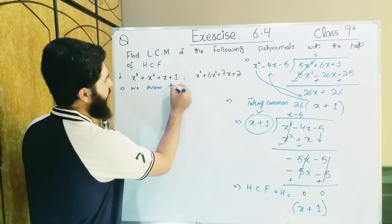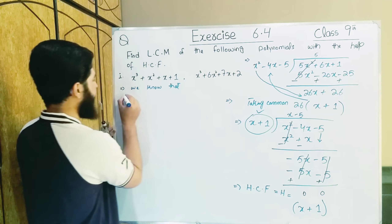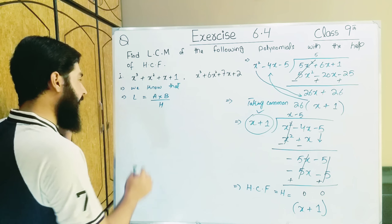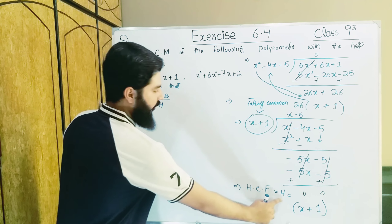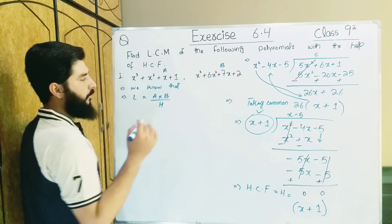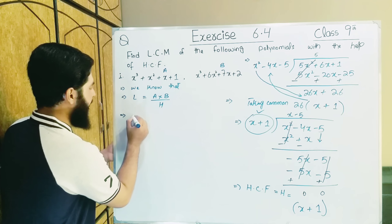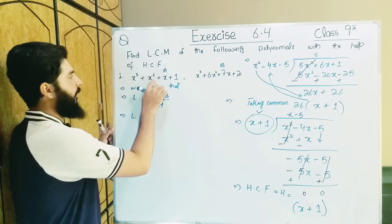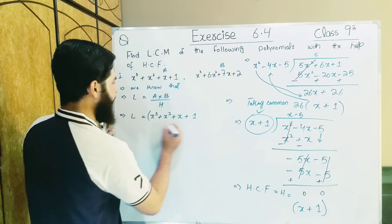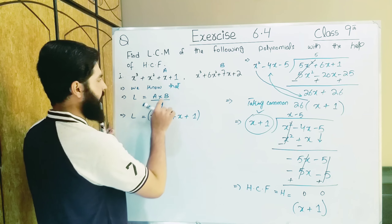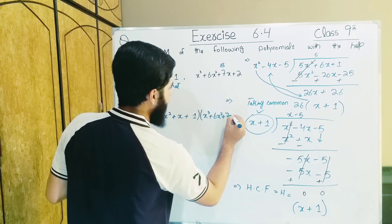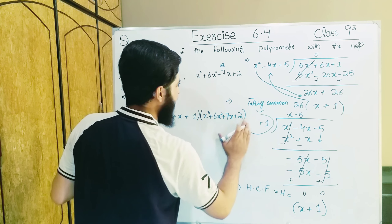We know that: LCM × HCF = A × B, where L is LCM, H is HCF, and A and B are the two polynomials. So: LCM = (A × B) / H. L is unknown; A is x³ + x² + x + 1; B (the second polynomial up to x⁶ + ... + 7x + 2) follows. We put all values.